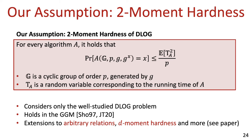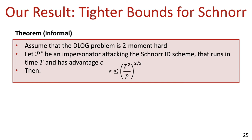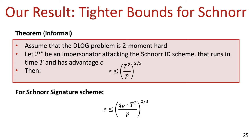In the paper, we also consider extensions of this assumption to arbitrary relations beyond just the D-log relation and also to higher moments of the adversary's running time potentially beyond the second moment. With this assumption, we can now state our results more accurately. Assume that we work in a group in which the D-log problem is second moment hard. Then, for any impersonator attacking the Schnorr identification scheme that runs in time t, her advantage in breaking the security of the scheme is at most (t squared over p) raised to the power of 2/3, where p is the order of the group. For Schnorr signatures, we obtain a similar bound, but with a multiplicative factor of q_H raised to the power of 2/3, where q_H is the number of random oracle queries issued by the attacker.